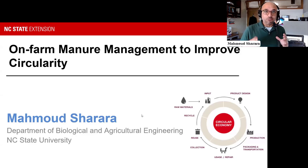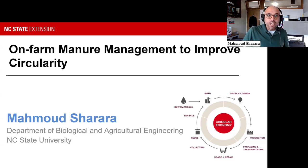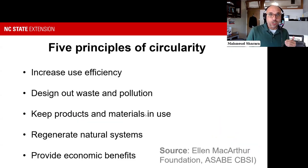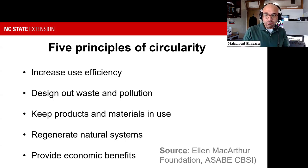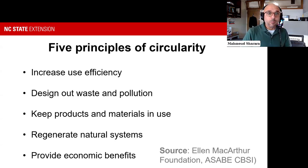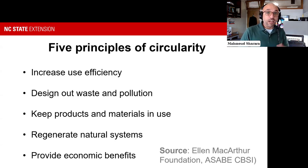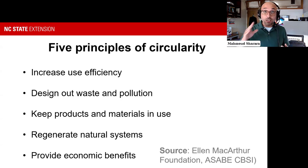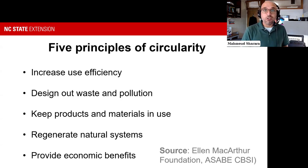The circle is a very symmetrical figure, so there's a lot of interest in getting to that perfect way of operation. Some of these principles are articulated by the MacArthur Foundation, which did a lot of the work around this, and also our Society for Agricultural and Biological Engineers. Those five principles are improving efficiency of using resources, designing out pollution and waste, keeping products and materials moving in that cycle continuously, and regenerating natural resources and providing economic benefits while we're at it.